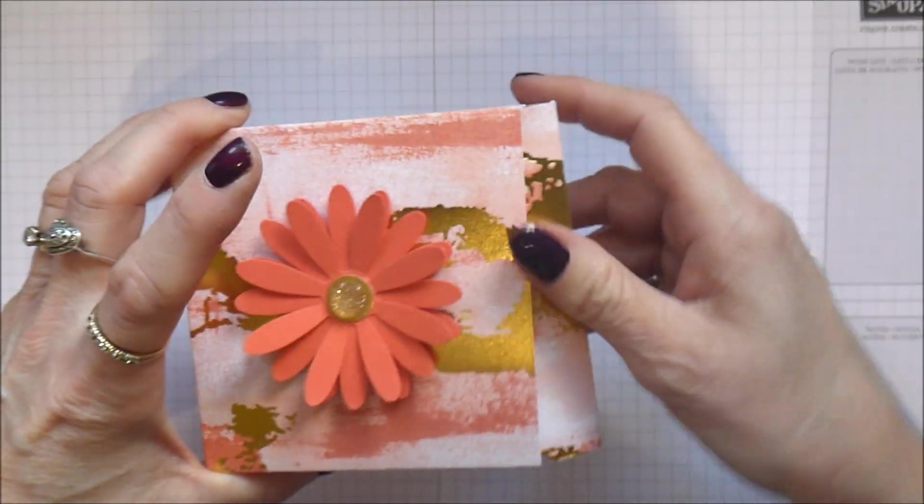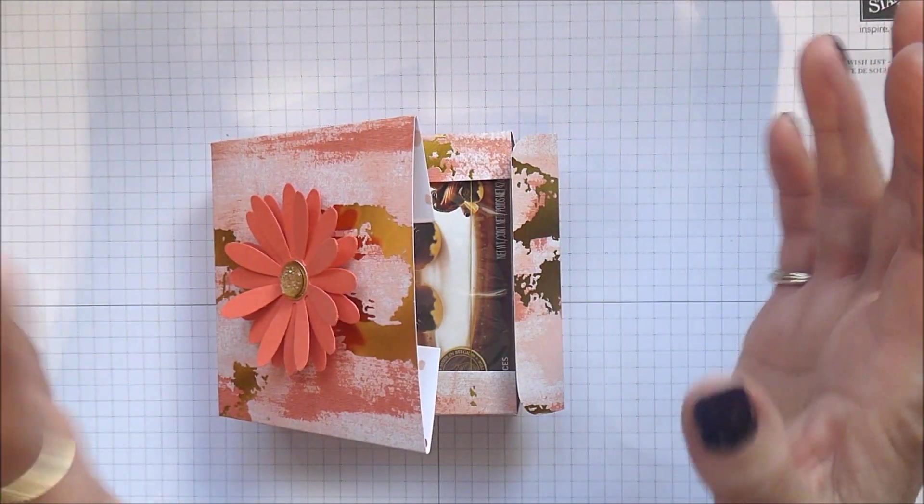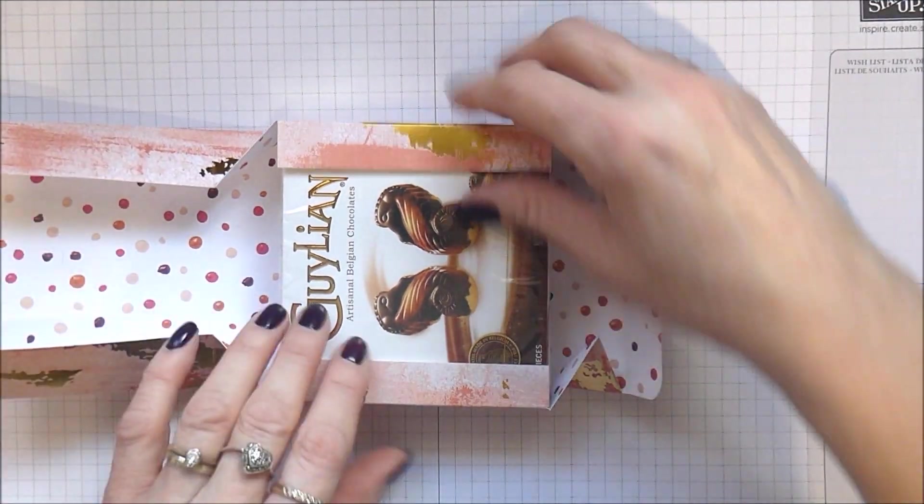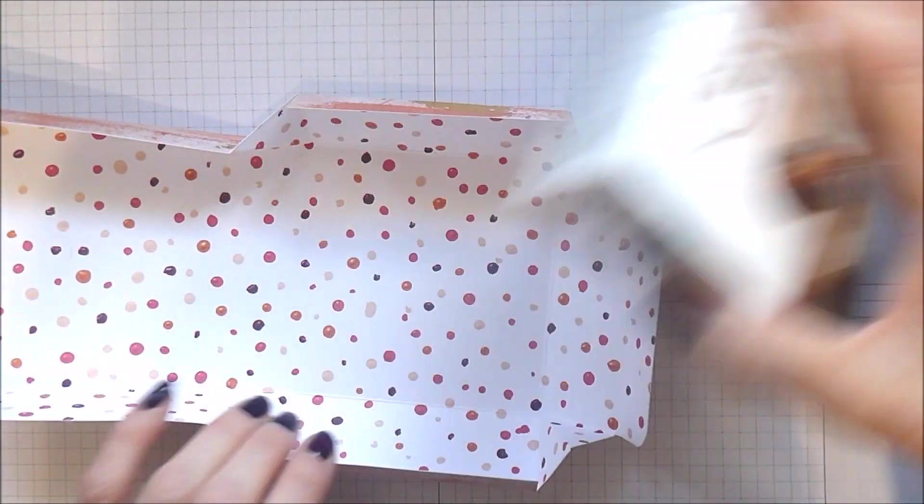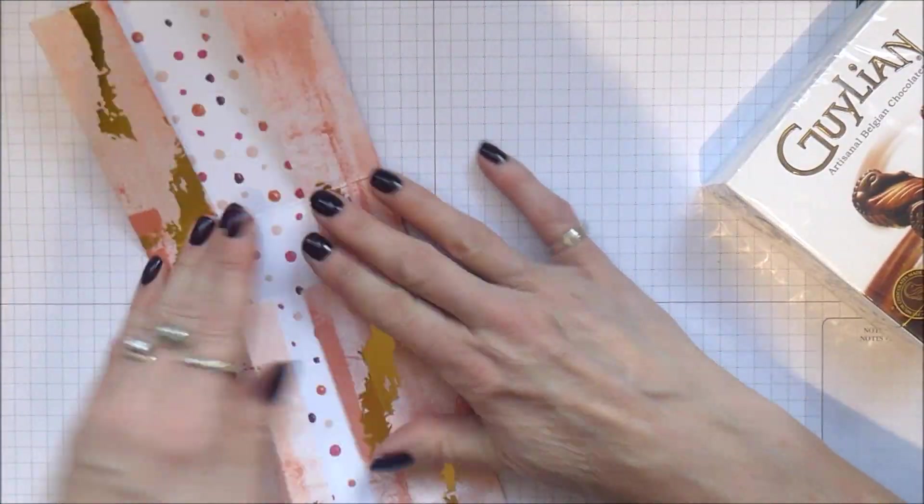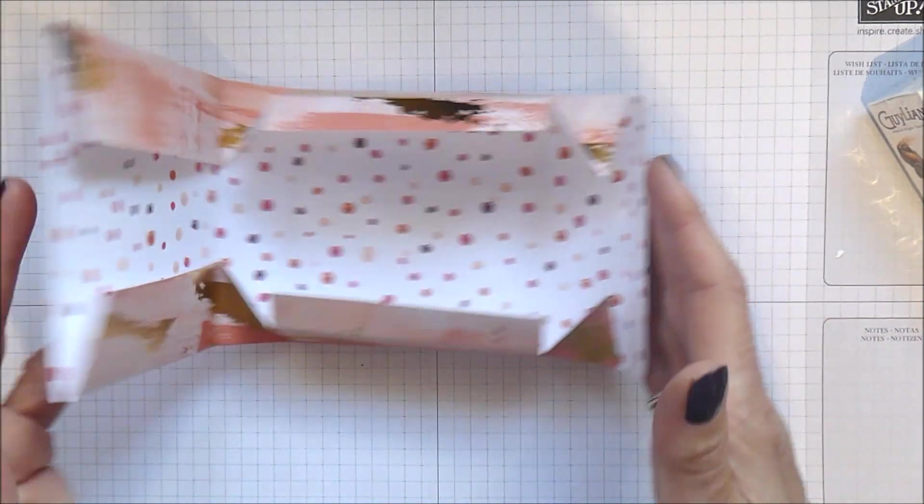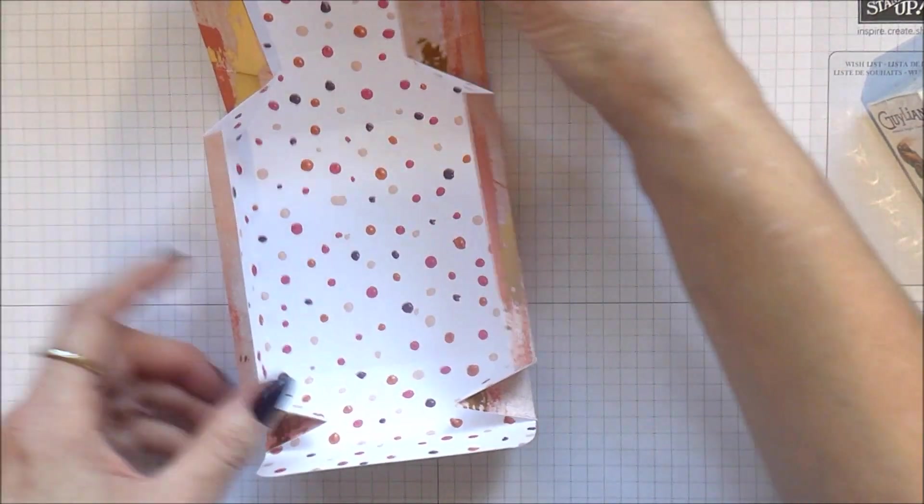and this is how it opens. So it's kind of like an origami box you could call it. It folds flat. Once you've done all of your scoring you can just pop it away in a drawer for a rainy day. But as you can see it just comes up together really well.